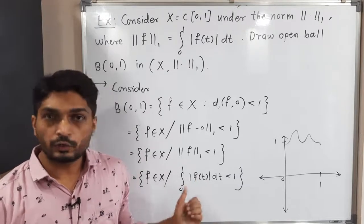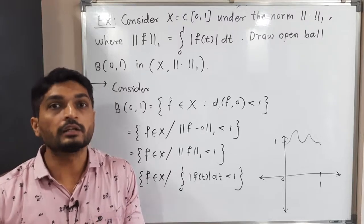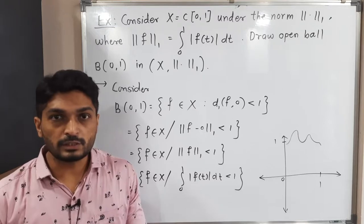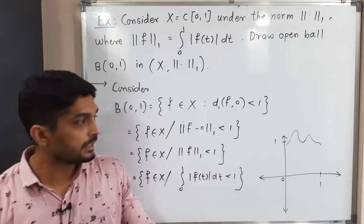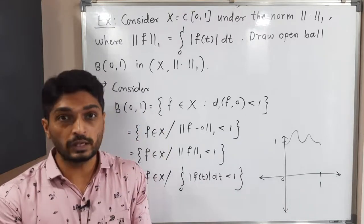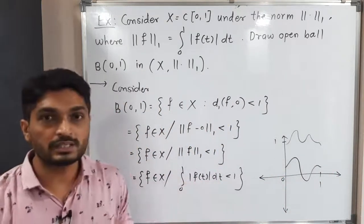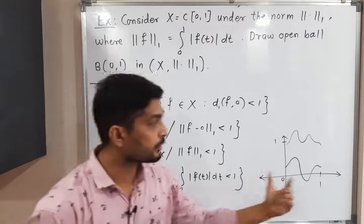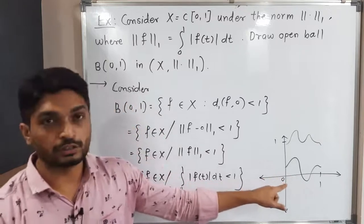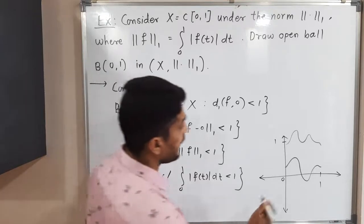Let us understand the geometrical meaning. Integration is nothing but the area under the curve. We have taken |f(t)|, so in case the function is in the negative part of the x-axis, we apply the modulus and it returns a positive value. So if you have a function like this — a continuous function defined on the closed interval [0,1] — the negative part of the function, when the modulus is applied, returns a positive value.